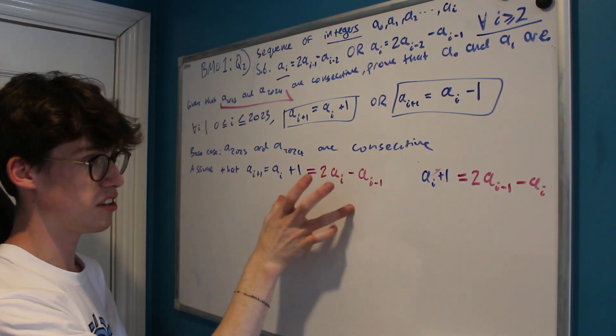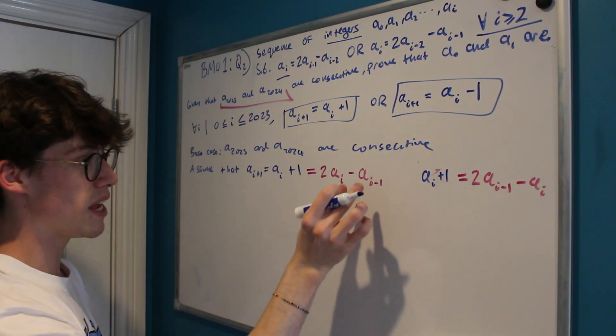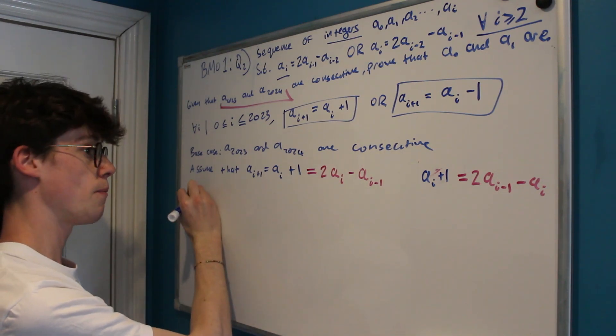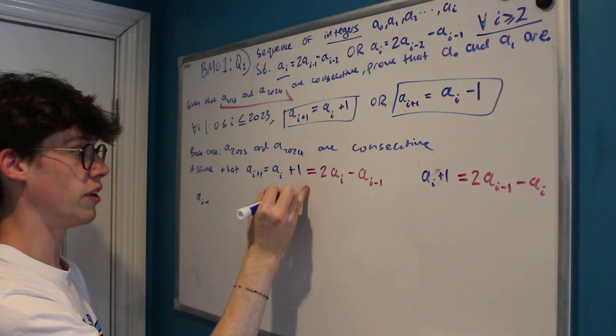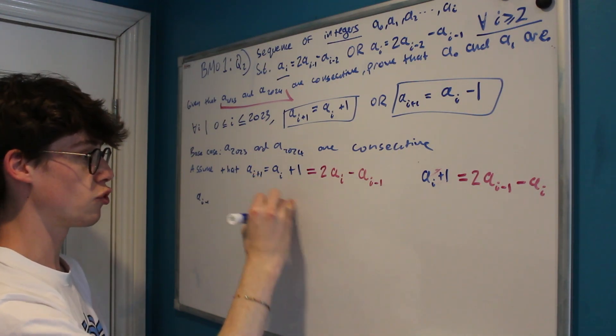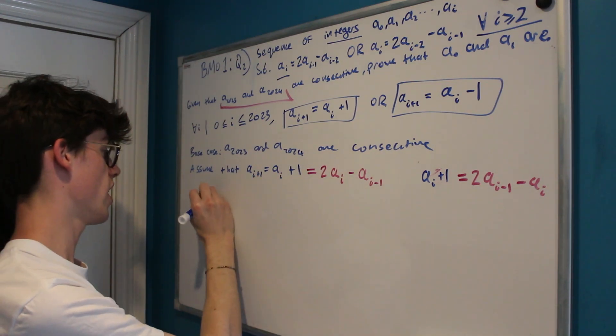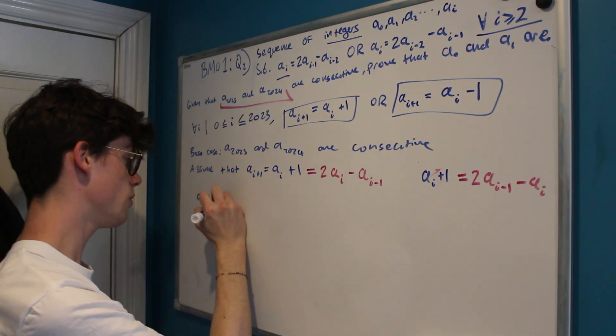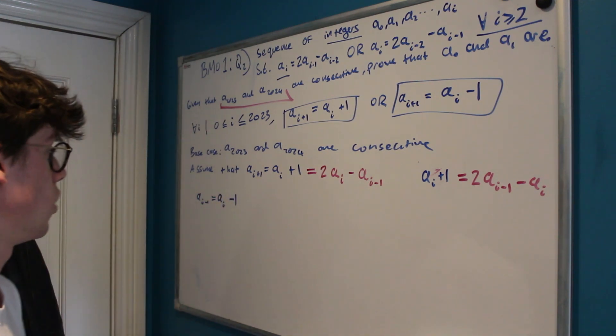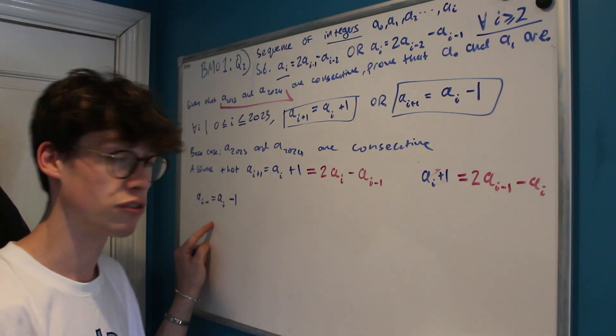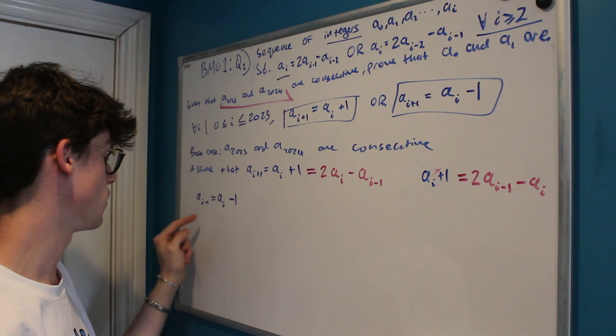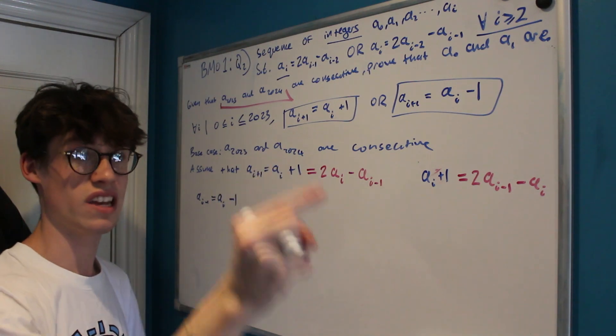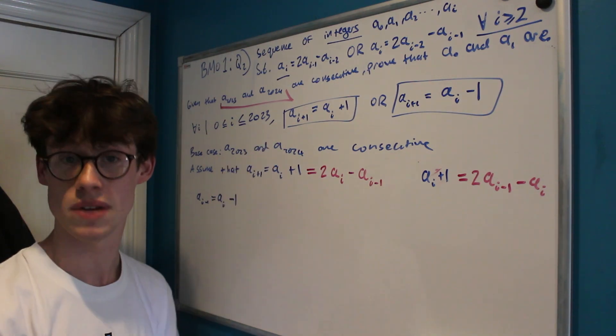Now just to clarify where this has come from, it's that we know that for ai plus 1 it always has to be equal to either two times one less than it minus two less than it, or two times two less than it minus one less than it. So let's rearrange these two expressions and see what it yields for us. So I'm going to make ai minus 1 the subject. If we add ai minus 1 to that side, we subtract ai there and subtract one there, we get that if this is true then ai minus 1 is equal to ai minus 1. That's perfect, that is a result that we're absolutely looking for because it tells us that one less than ai is just the same as taking one step down, which implies it must be consecutive.